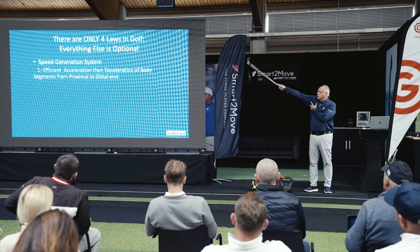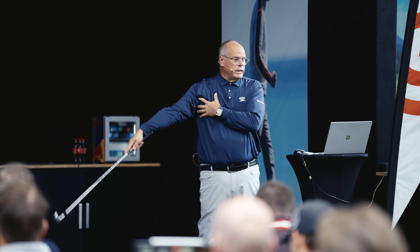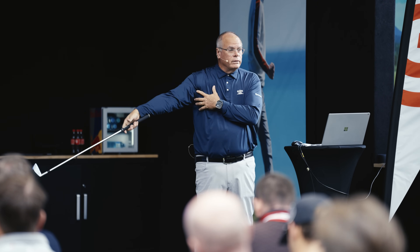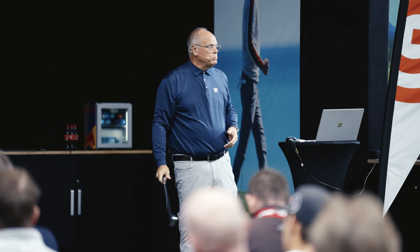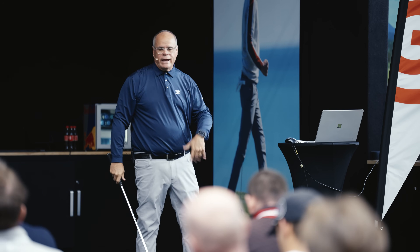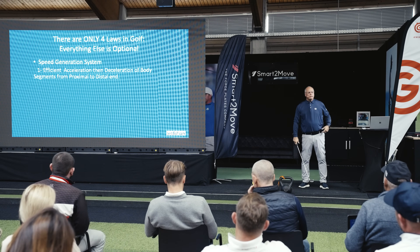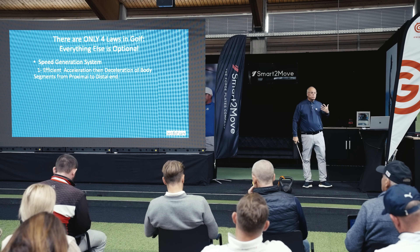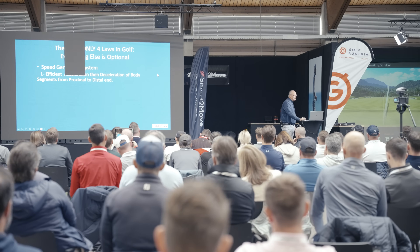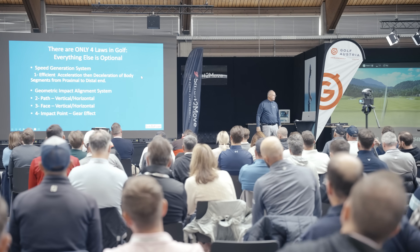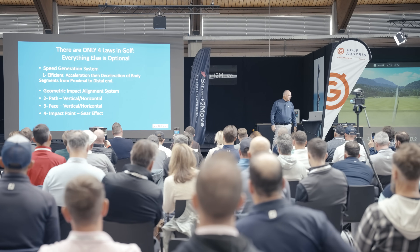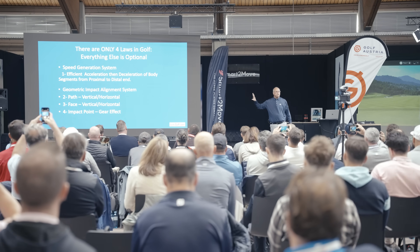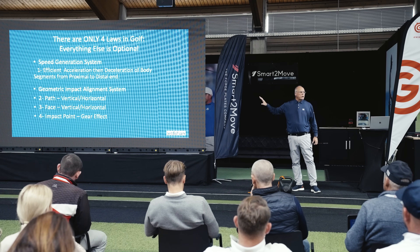If we sit here doing this, that's one speed, and then when we go out of line and in line, that's much more speed. That actually happens in the ankles, the knees, the hips, all the way through the body from proximal to distal end. What I really focused on in my earlier days is the geometric impact alignment system: the path, the face, and the impact point. Those are the only four things that tell a golf ball what to do — putt to drive.